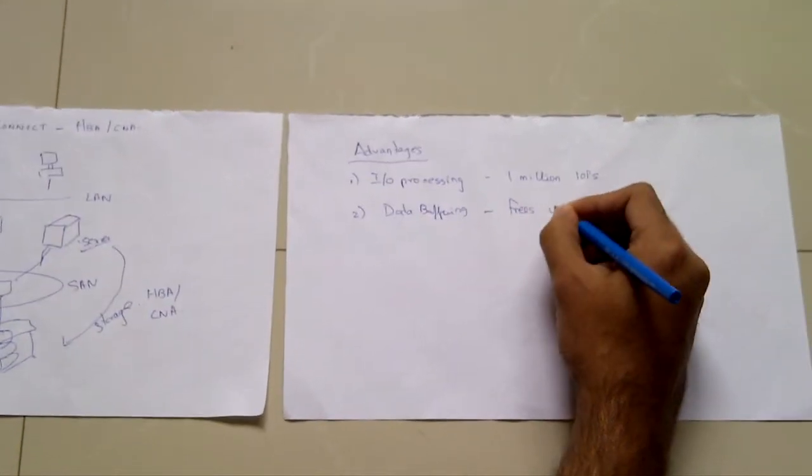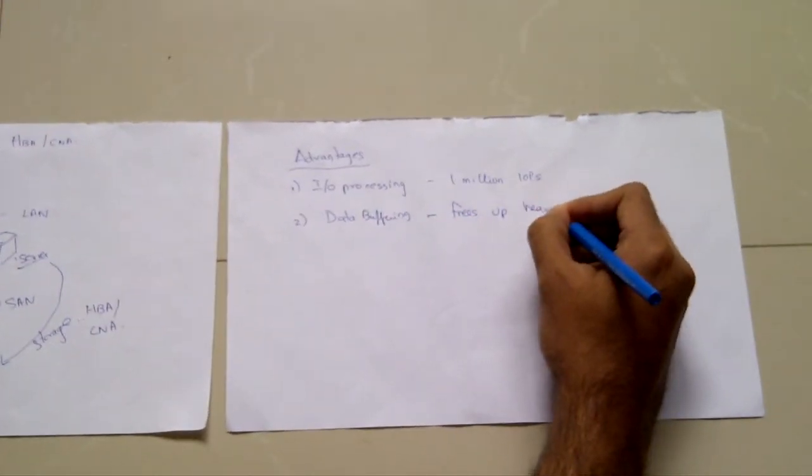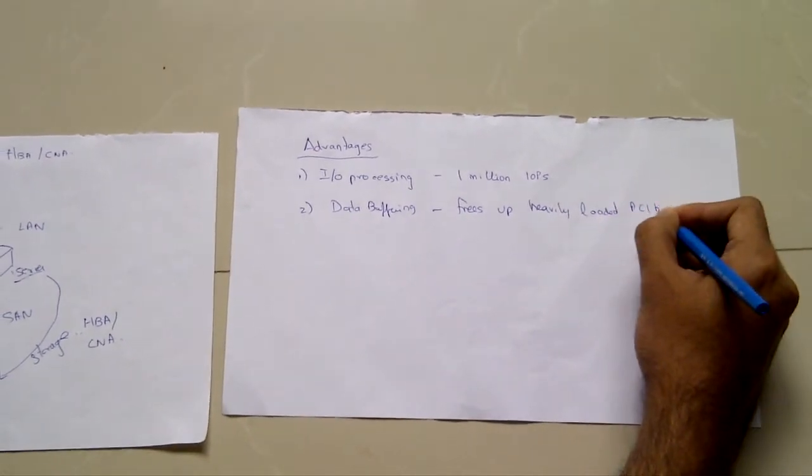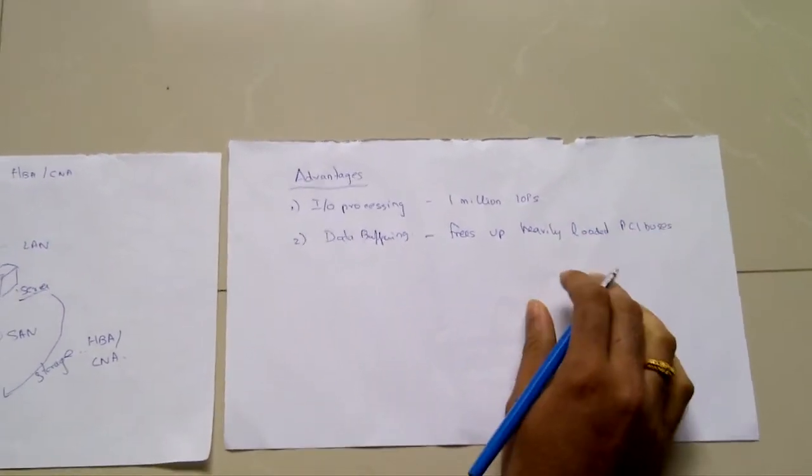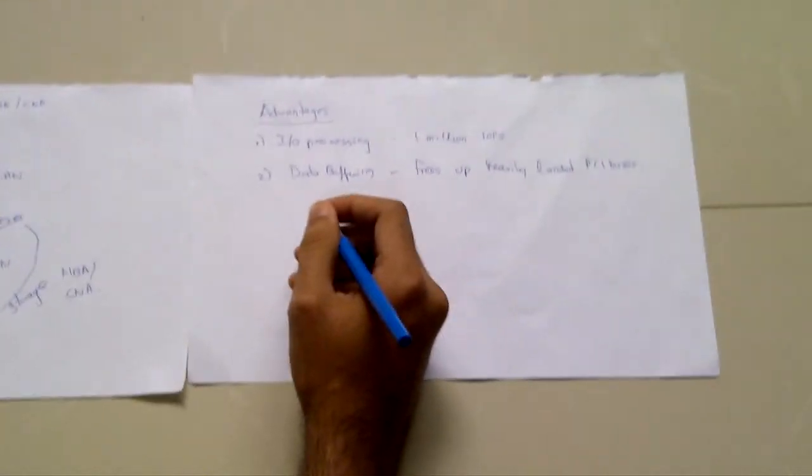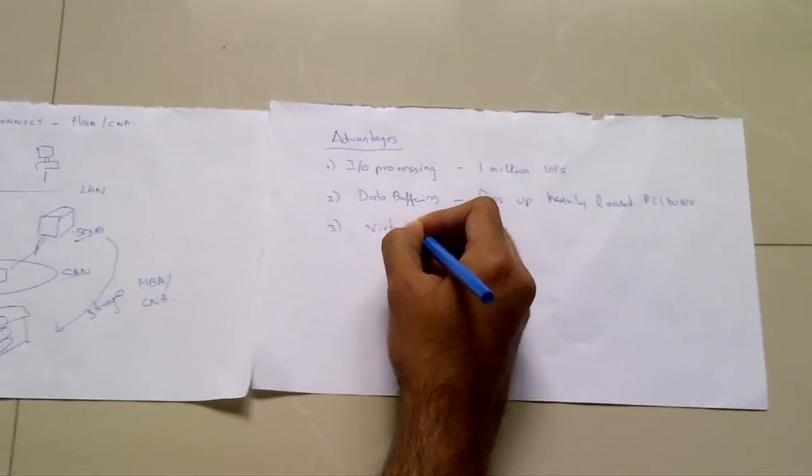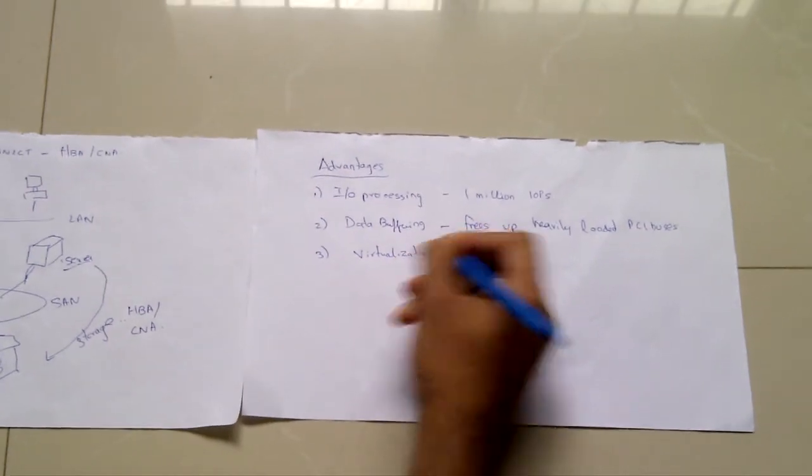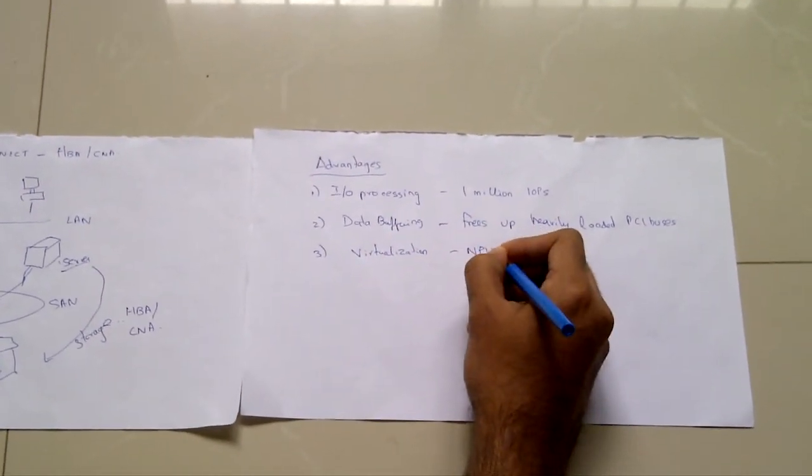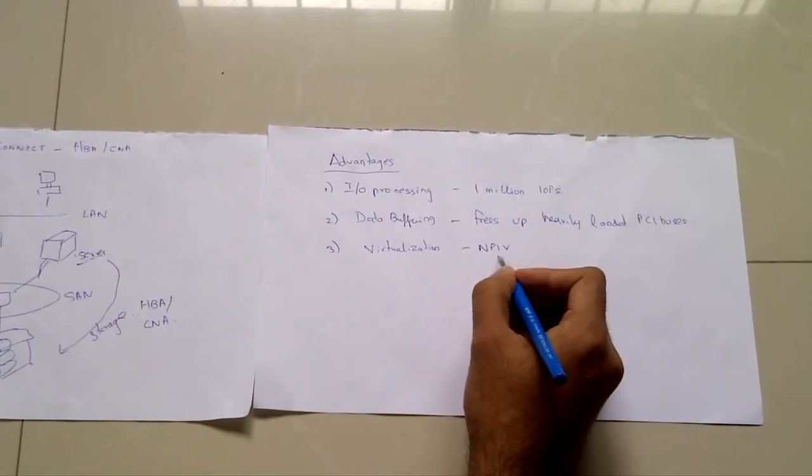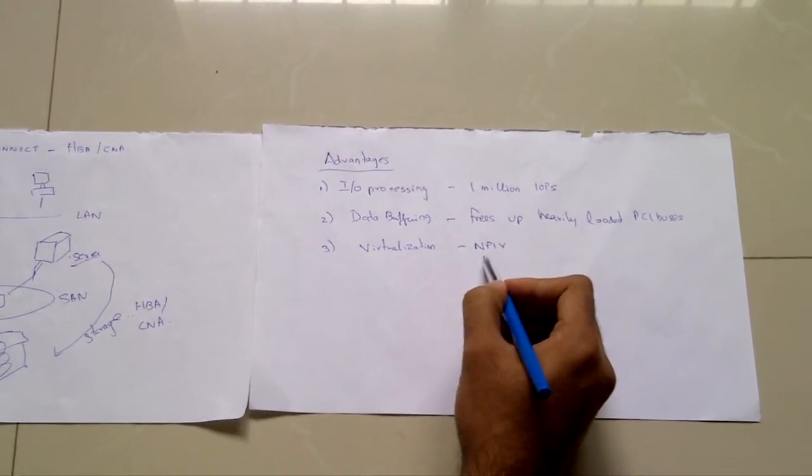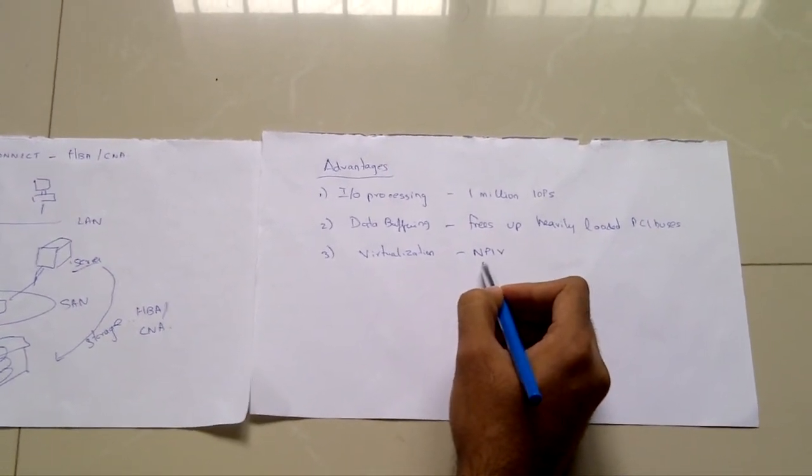The third advantage is virtualization. Import ID virtualization or NPID is the term used to describe this. It is a fiber channel facility that allows multiple import IDs to share a single physical input.